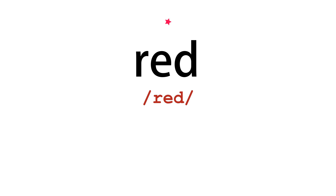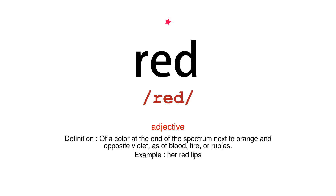Red. Adjective. Definition: of a color at the end of the spectrum next to orange and opposite violet, as of blood, fire, or rubies. Example: her red lips.